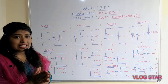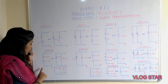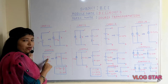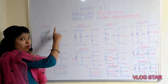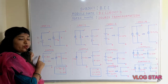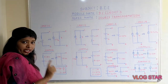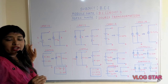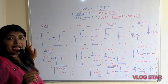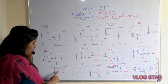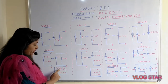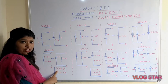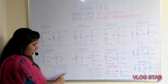To understand case number one, let's consider one example. As you can observe, the voltage value and resistor value are given. As per case number one, the voltage source in series with the resistance can be converted into a current source parallel with the same resistor. The current value is found using Ohm's law: I = V/R. Here V is 15 volts and R is 5 ohms.